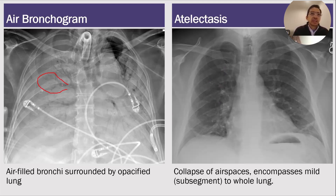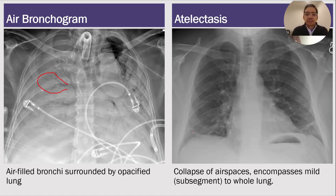When you see an air bronchogram, that's a sign of abnormality. And then atelectasis — atelectasis is collapse of air spaces, and it encompasses mild subsegmental atelectasis to whole lung.